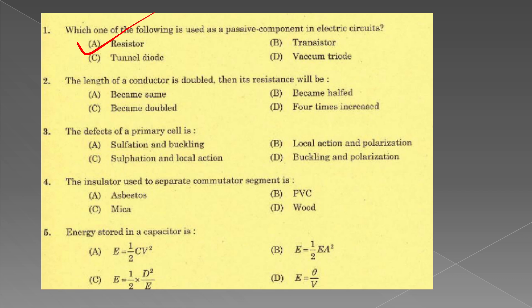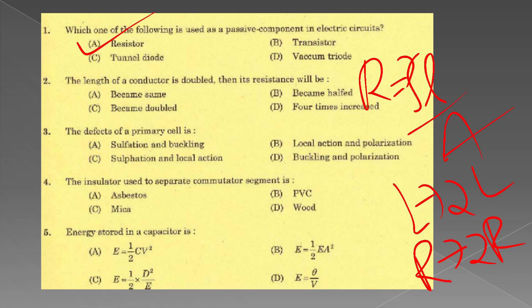Length of the conductor is doubled. R equals rho L by A. R is resistivity, L is length of the conductor, A is area of the cross section. When length is 2L, R becomes 2R. Option C, it is doubled. Resistance becomes double.